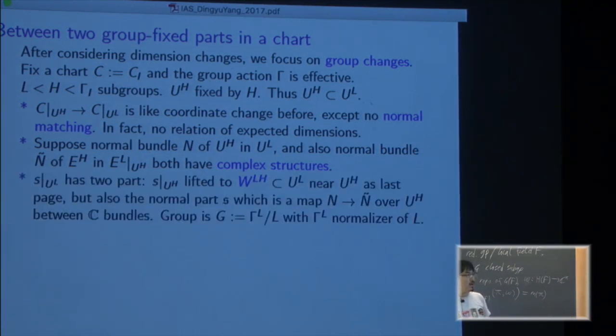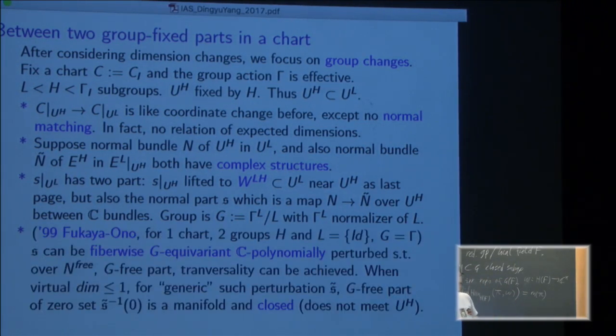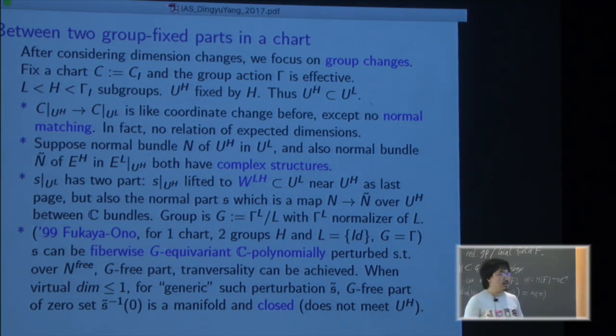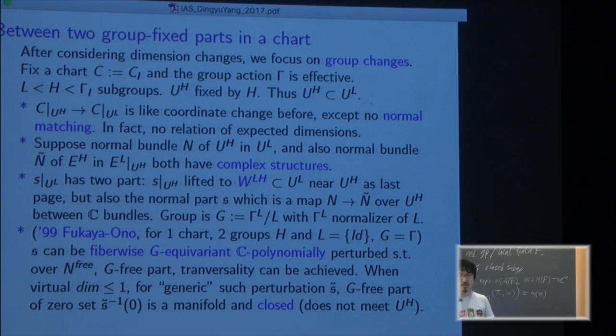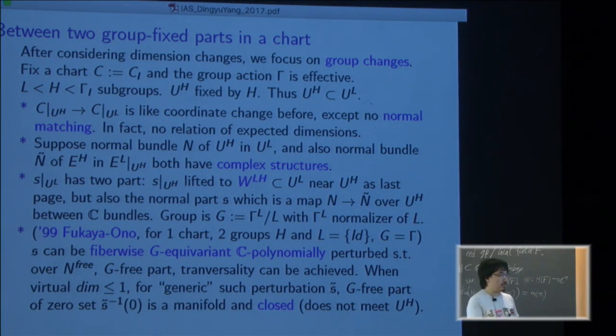Okay, so if you look at the larger manifold, smaller group, the section has two parts. One is lifted from this smaller group as before. The other one can be transformed into a map, an anti-linear map between two complex vector bundles over this lower base. And a program outlined in a very short paper in 1999 by Fukaya and Ono, they did for one chart in two groups and basically says that there is a special, making use of the normal complex structure, there is a special kind of perturbation called fiberwise polynomial perturbation.